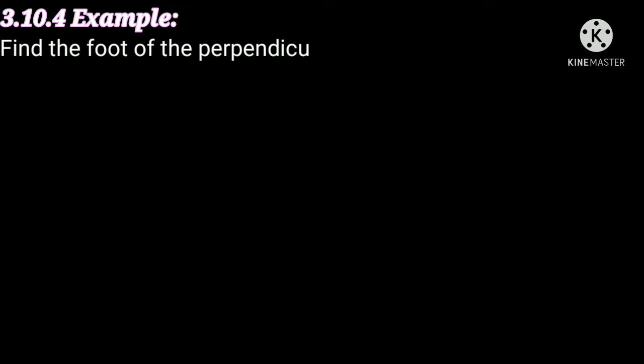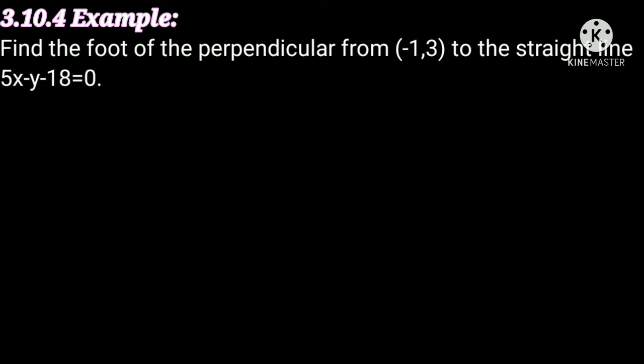The straight line 3.10.4 example problem is: find the foot of the perpendicular from (-1, 3) on the straight line 5x minus y minus 18 equal to 0. In this problem we have to find the foot of the perpendicular from the given point to the straight line equation, using the condition proved in theorem 3.10.3 — the foot of the perpendicular theorem. Now we will solve the problem.